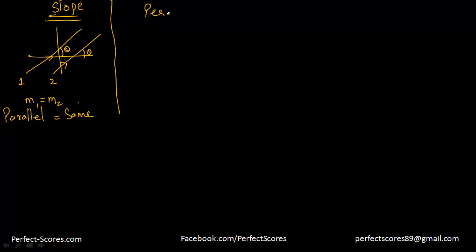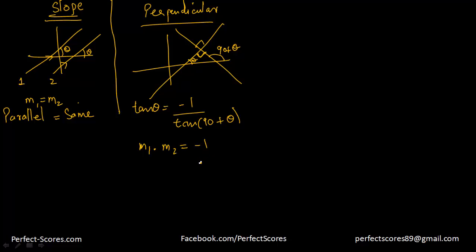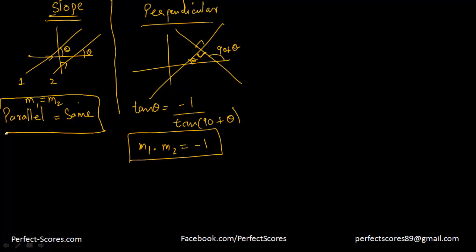If the lines are perpendicular to each other and one makes angle theta with the x-axis, the other makes angle 90 plus theta. Tangent theta is the negative reciprocal of tangent (90 plus theta) — something you can verify yourself. That means when lines are perpendicular to each other, the product of their slopes is always equal to minus 1. This is an important rule to remember.